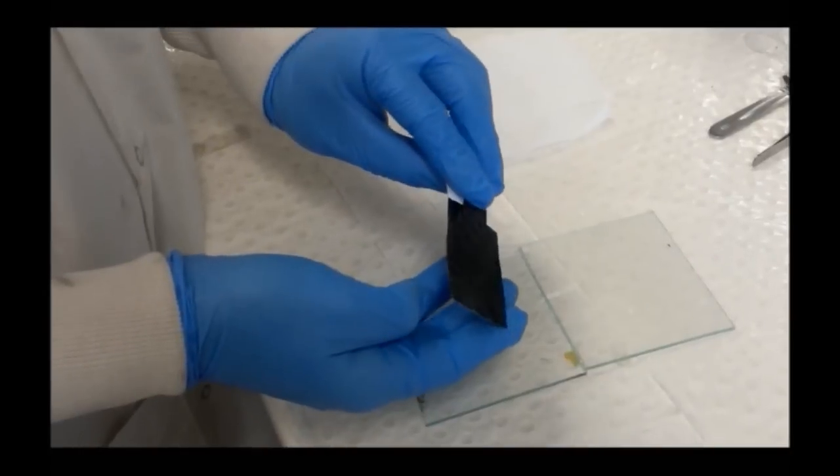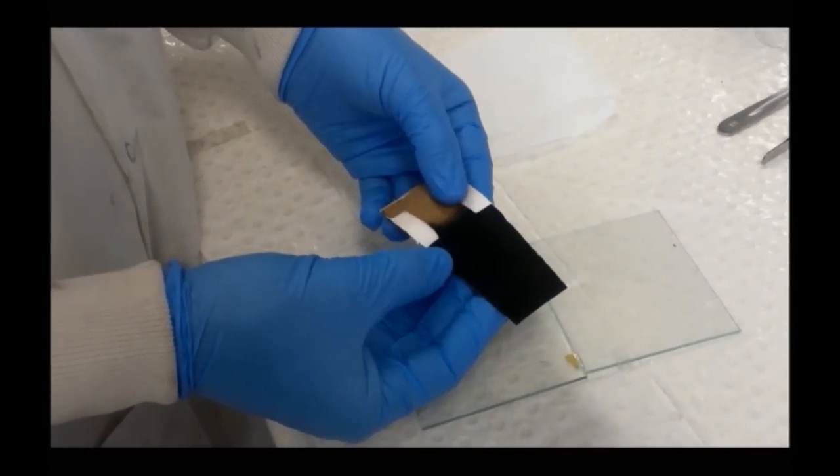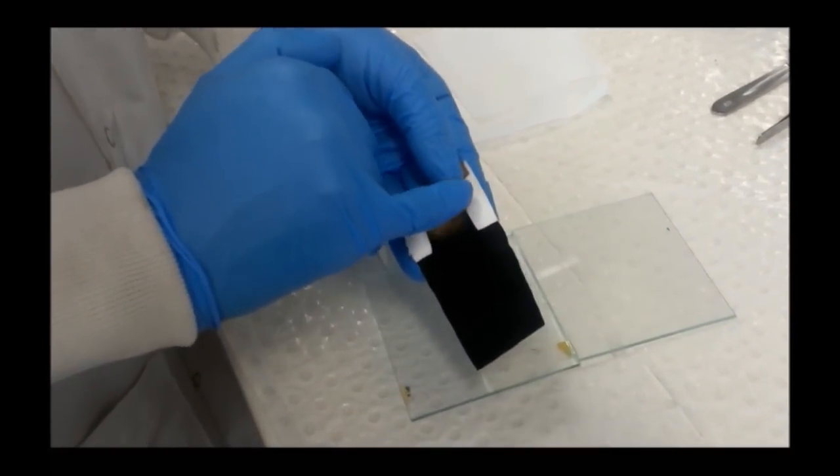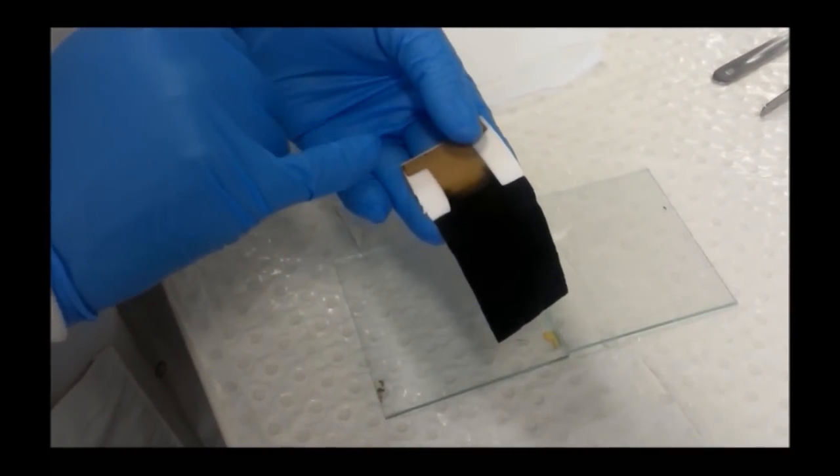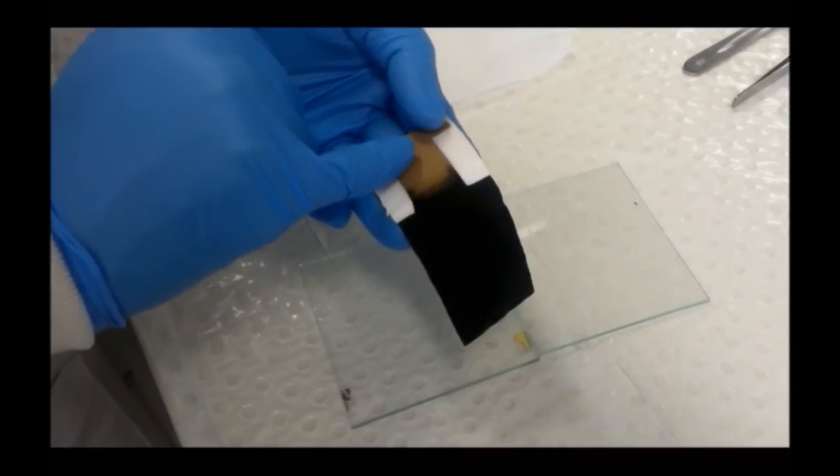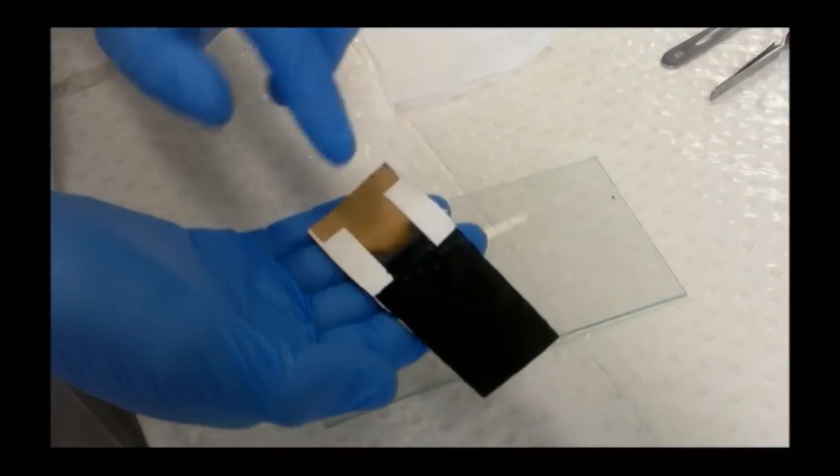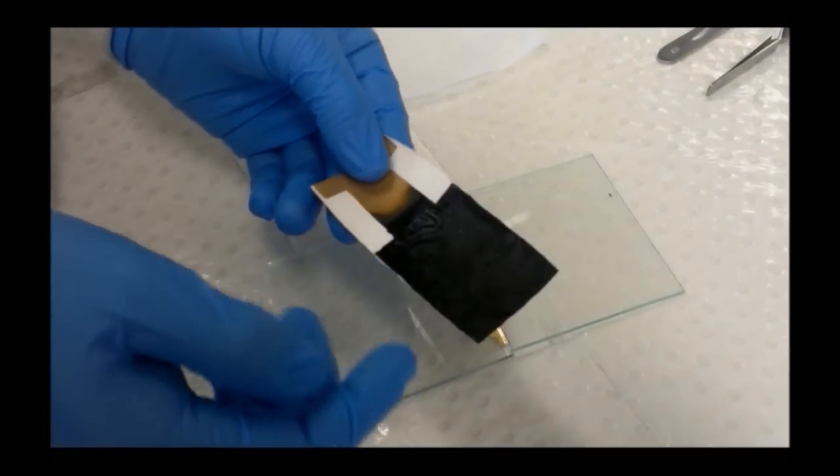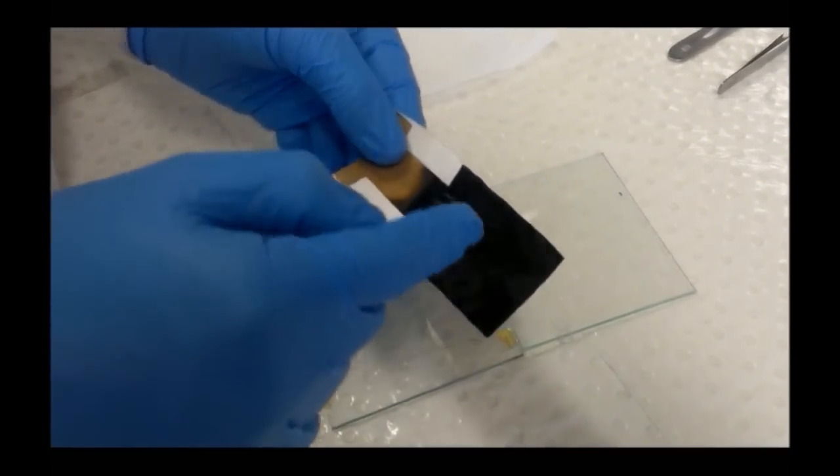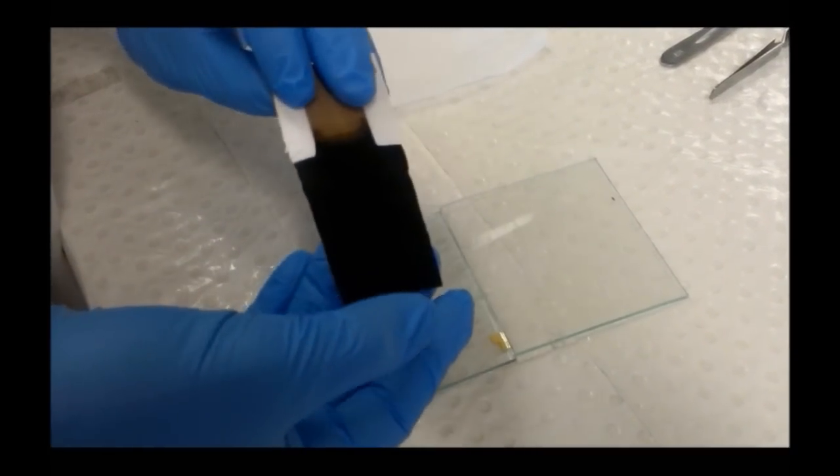This is one of our polypyrrole bender actuator samples as we make it. The white area is polyvinylidene fluoride filter membrane, coated in gold on both sides. The gold acts as an electrode for deposition of polypyrrole, which is the black layer.